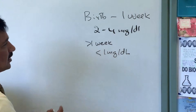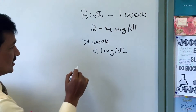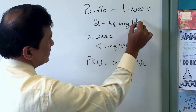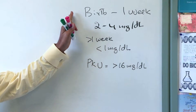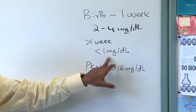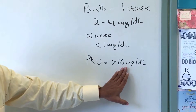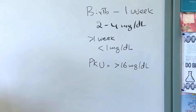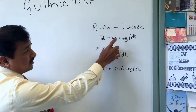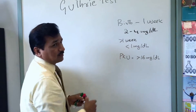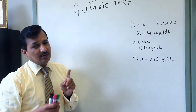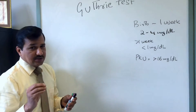In normal babies, blood phenylalanine after one week is less than one milligram per deciliter, whereas in PKU patients it will be more than sixteen milligrams per deciliter. The Guthrie test is done at the sixth to seventh day because by that time the phenylalanine level will have fallen closer to one milligram per deciliter, below the two to four milligram per deciliter range seen at birth.